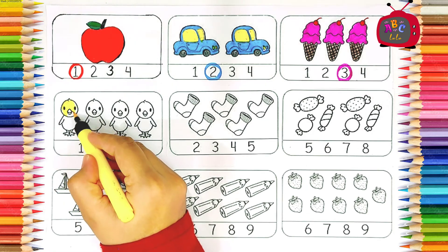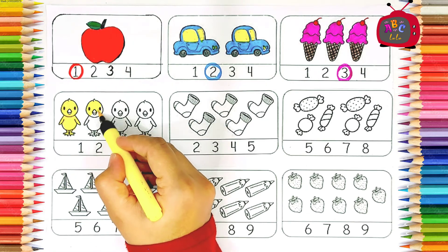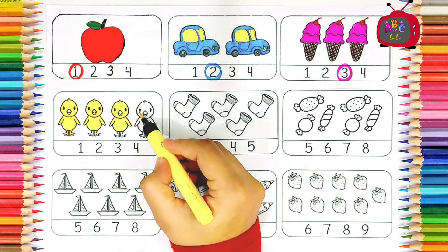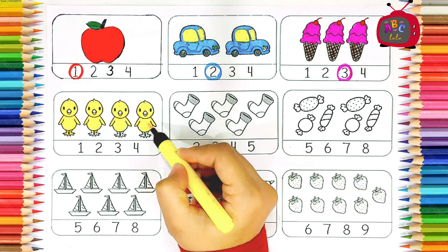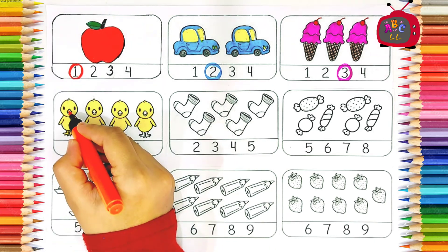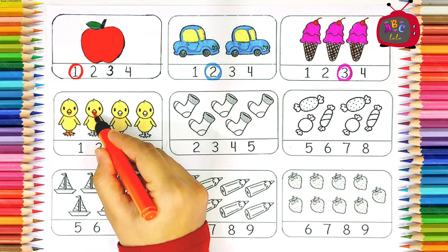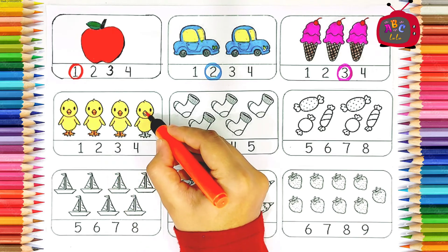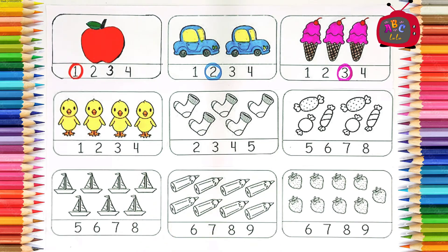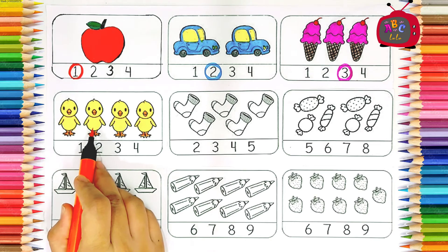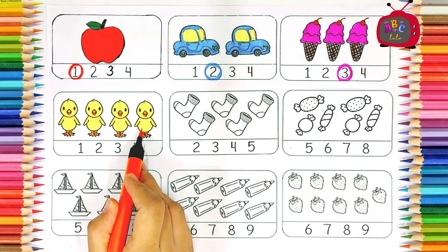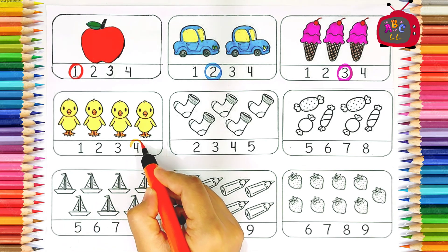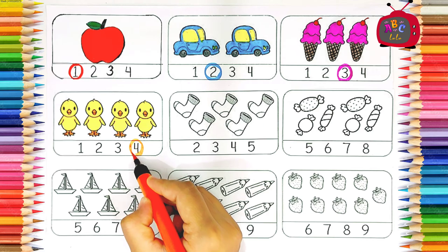Chick. One chick. Two. Two. Three. Four. One, two, three, four. Four chicks. Four. F-O-U-R. Four.